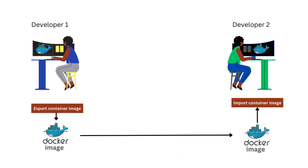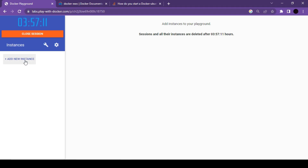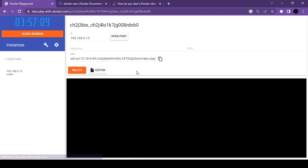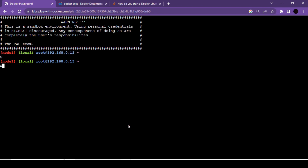In Docker we have import and export commands. Using these commands we can import new images into our instance, or we can export our container as a zip file or tar file and send that to our teammates so they can import it into their machines. That's what we are going to see in this video. Let's see this in action — first let's quickly launch a new instance.